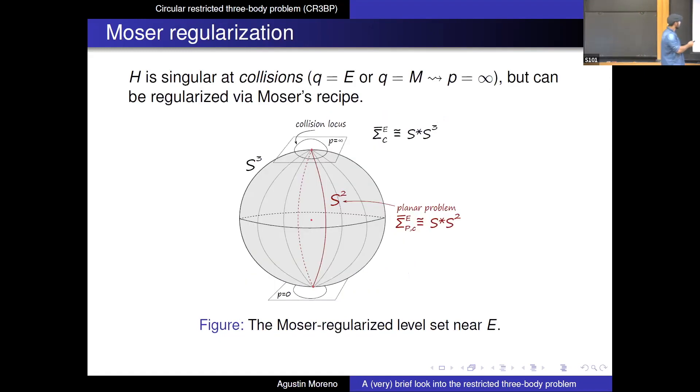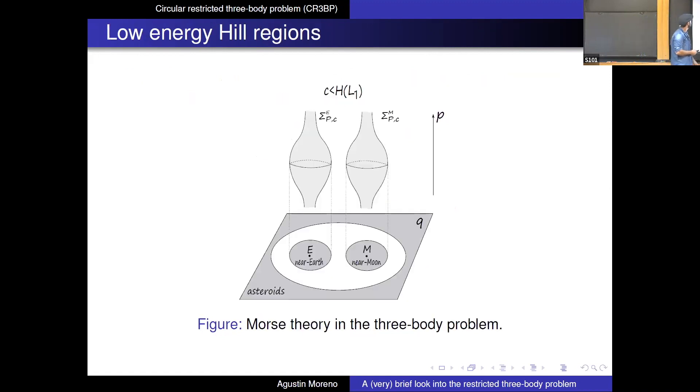So the Hamiltonian, if you look at it, is of course singular accolitions. But if your satellite crashed against the Earth, which means the Q is E, or if it crashed against the Moon, Q is E, then conservation of energy will tell you that the velocity has to explode at collision, right? If you look at the picture before, you know, if you're going to crash against the Earth, then you better shoot off to infinity in the five directions. So the levels are actually not compact.